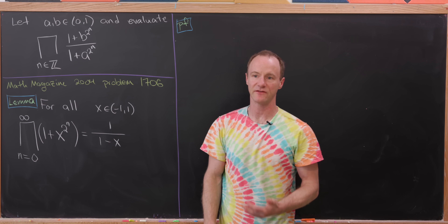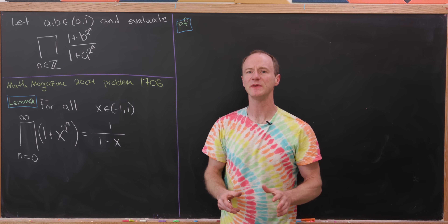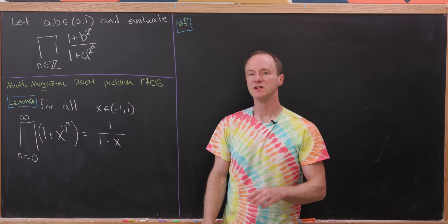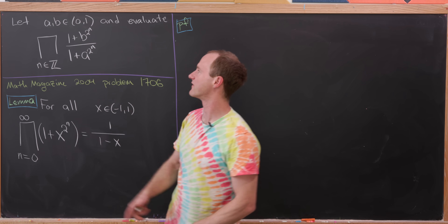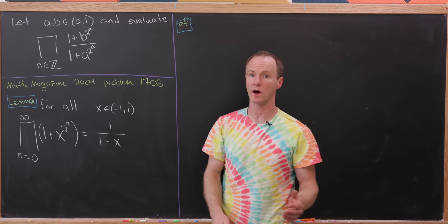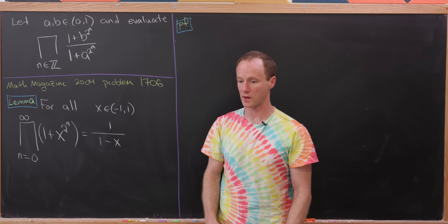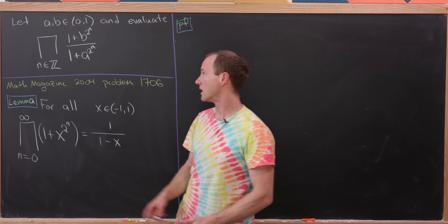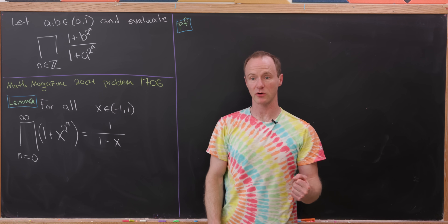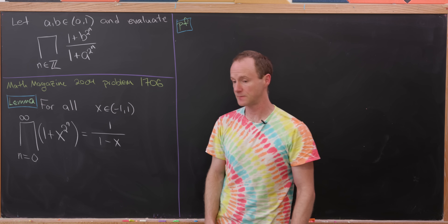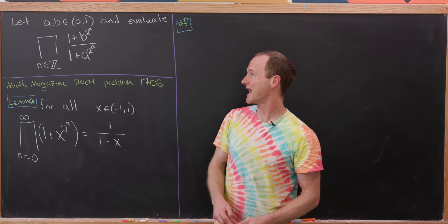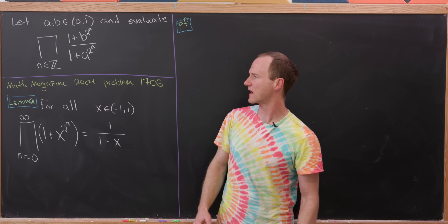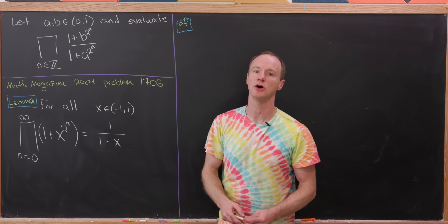Today we're going to look at a very interesting doubly infinite product, which can kind of be seen as a generalization of a well-known infinite product. In particular, let's suppose that we have a and b on the interval from 0 to 1, not including 0 and also not including 1. Our goal is to find the product over all integers n of (1 + b^(2^n)) / (1 + a^(2^n)). I found this in Math Magazine — it's problem 1706.